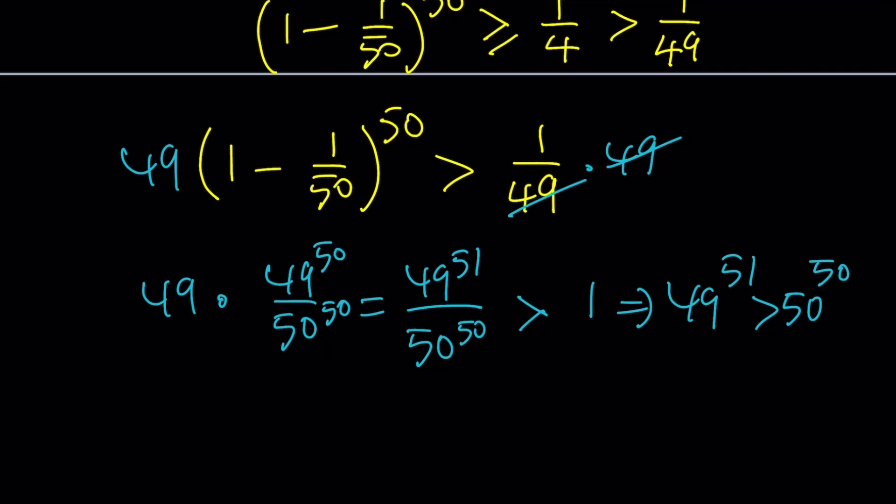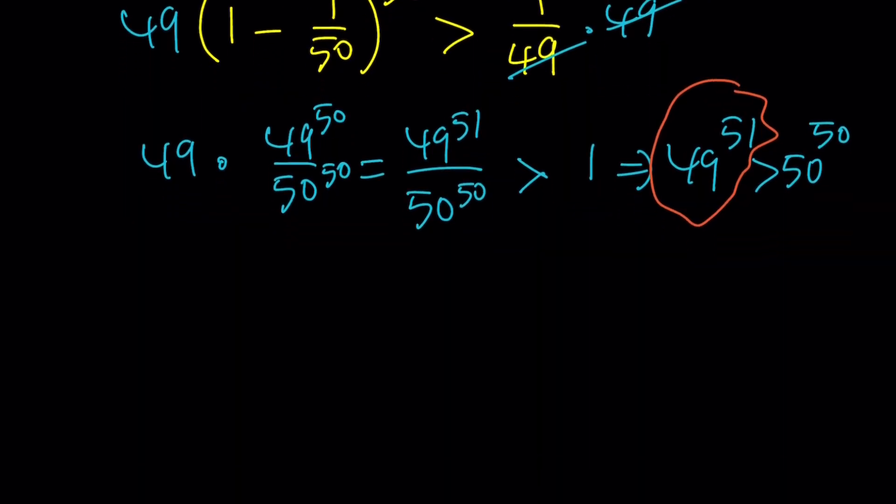So the larger number is 49 to the power 51. As a general principle, if the numbers are pretty close, then the one with a smaller base is usually larger because it has a bigger exponent. Let's take a look at the second method.